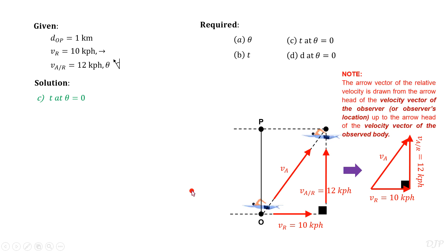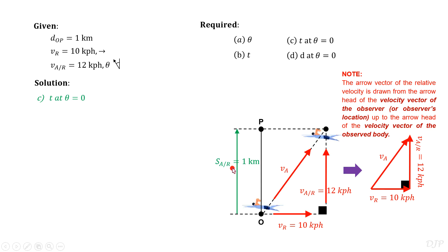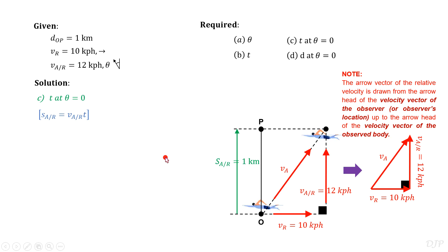Again, always make sure that the arrow vector of the relative velocity is drawn from the arrowhead of the velocity vector of the observer up to the arrowhead of the velocity vector of the observed body. Since the width of the river is given, we can now denote the relative displacement of the athlete with respect to the river as S sub A over R equal to 1 km. Since displacement equals velocity times time, we use the corresponding velocity V sub A over R to cover this 1 km displacement. Since the relative displacement and relative velocity are already known, we solve for time T, giving us T equal to 0.0833 hours or 300 seconds.